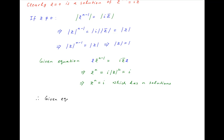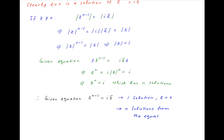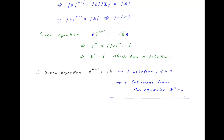To summarize, the given equation z raised to the power n minus 1 equals i times the conjugate of z has one solution z equals 0, and another n solutions from the equation z raised to the power n equals i, none of which are z equals 0. Therefore, the given equation has a total of n plus 1 distinct solutions, which is the required answer.